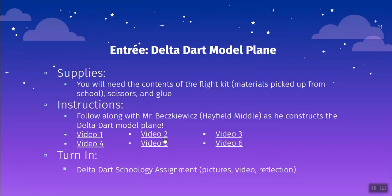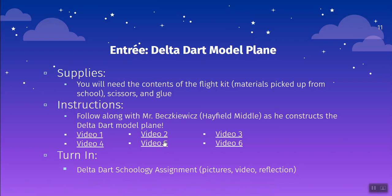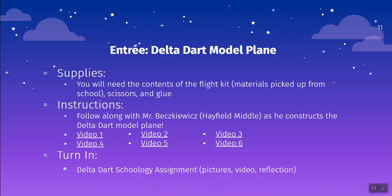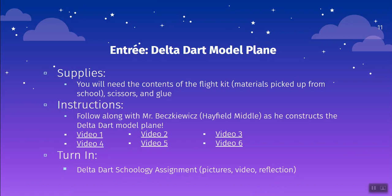For that Delta Dart model plane, you are going to need the contents of that flight kit — that clear plastic bag and materials you picked up from school. You'll also need some materials from home, like scissors and glue, and potentially a piece of cardboard or flat surface. To build this model, you'll be following along with a guest teacher from Hayfield Middle School who goes through and constructs the Delta Dart in six different video segments. You can also look at the instruction manual included in your flight kit. When you turn it in, there will be a Schoology assignment called the Delta Dart, where you'll fill out a template including three pictures, a video, and the answers to three reflection questions.